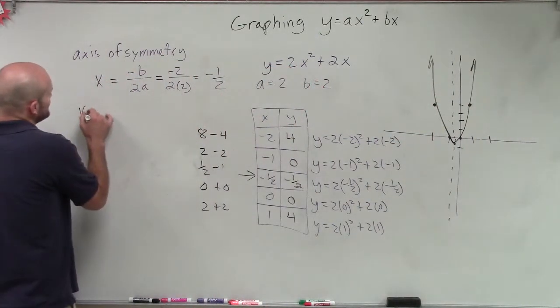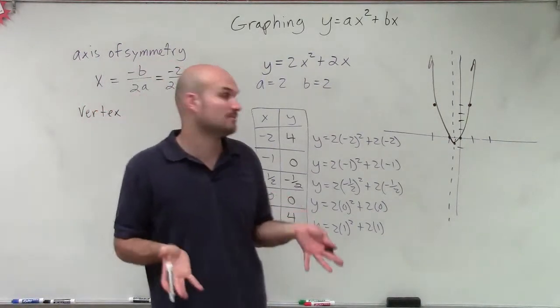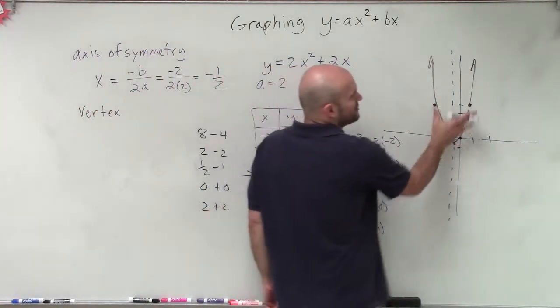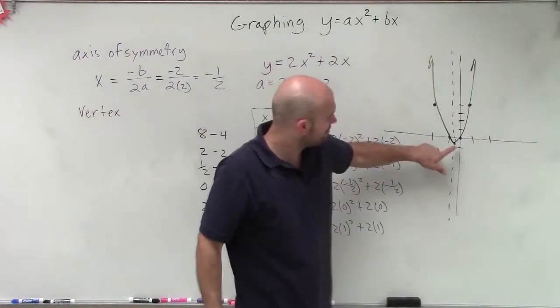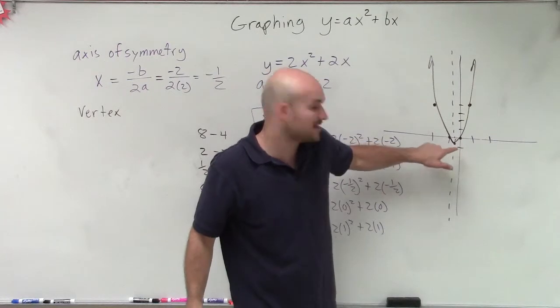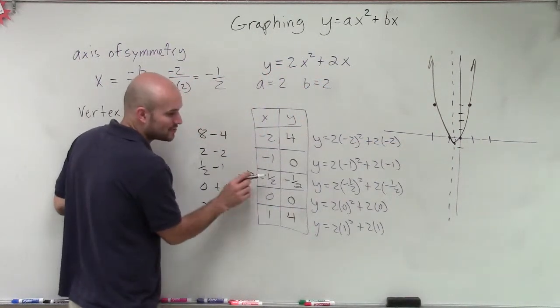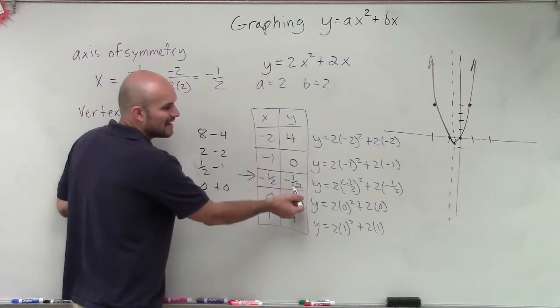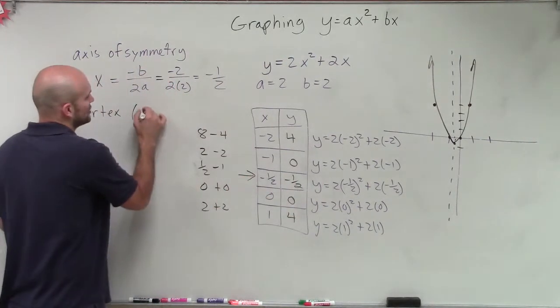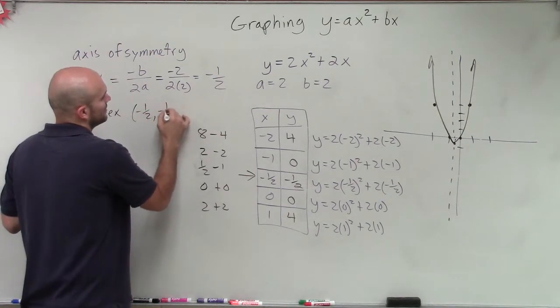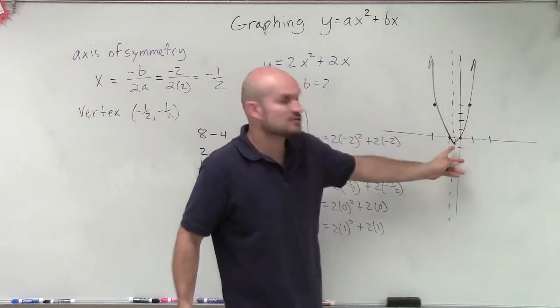So now let's take a look at our vertex. Remember, the vertex is the maximum or the minimum point of our graph. Notice that this graph is going to continually keep going up, so there's not going to be a maximum point. But our minimum point is right this dot down there. Now we actually had to plot that dot. And that dot has the same x-coordinate as our axis of symmetry. And our y-coordinate is going to be the other point that we needed. So our vertex occurs at negative 1 half, comma, negative 1 half. Notice how the axis of symmetry runs through your vertex.